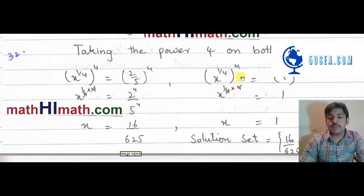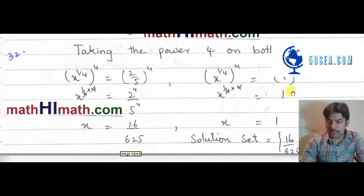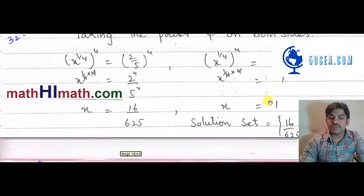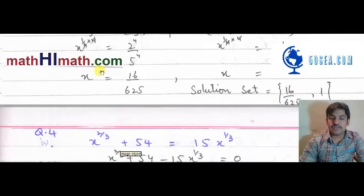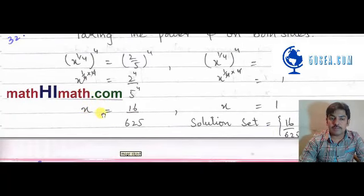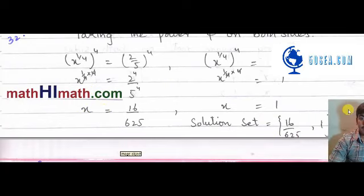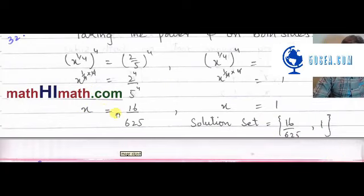یہ 4 اور 1 over 4 cancel ہو گئے۔ اور 1 کی power 4، one کو چاہے چار times یا سو times multiply کریں، one ہی آتا ہے۔ تو finally x کی دو values آ گئیں: x is equal to 16 over 625، اور x is equal to 1۔ تو یہ آپ کا solution set ہے: {16/625, 1}۔